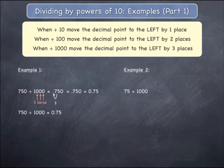Example 2: 75 divided by 1000. Write your starting number, 75, and if that starting number does not have a visible decimal point, you can add it at the end of the number.